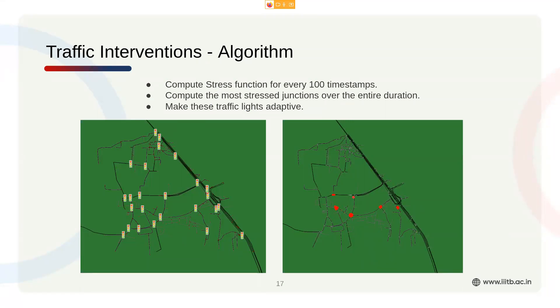There is a case to be made for making every single traffic light adaptive, which is certainly possible in theory. But changing something in the network involves a monetary aspect — it's not very feasible for all traffic lights to be made adaptive, especially now since the industry is just starting in Electronic City. So we chose a baseline of five traffic lights to be made adaptive. The more the merrier — making more adaptive will give better results.